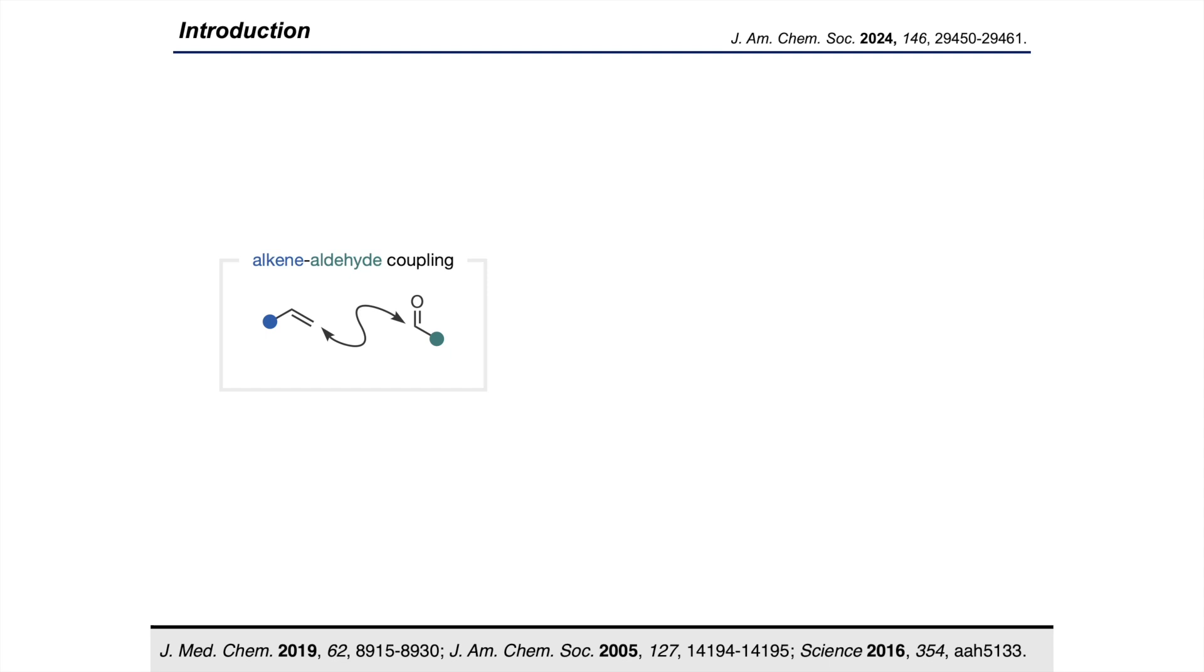Alkenes and aldehydes are fundamental building blocks in organic synthesis. They're abundant, structurally diverse, widely accessible, and their reductive coupling gives rise to a whole range of sp3-rich oxygenated scaffolds from sp2 progenitors that are then primed for diversification.